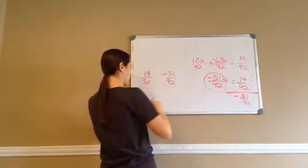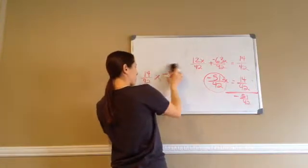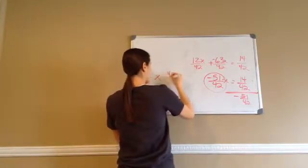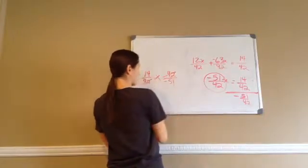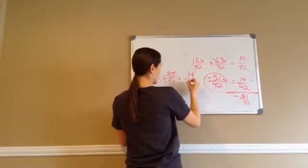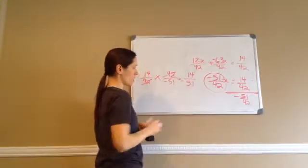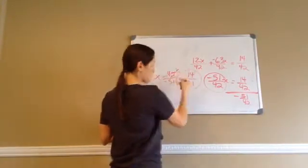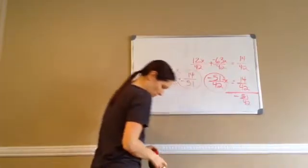You have to remember that you cannot divide — you have to multiply. And then these reverse: it becomes 42 over negative 51. The 42s cross out, and the final answer is 14 over negative 51. Final answer: x equals 14 over negative 51. And that will not reduce.